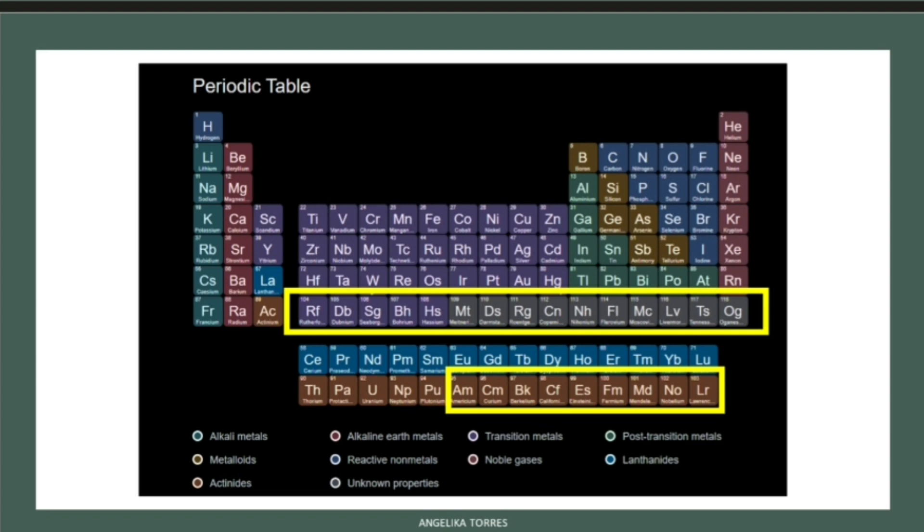24 of these elements are synthetic or man-made, meaning they are created by man in the laboratory. The synthetic elements are those with atomic numbers 95 to 118, as shown inside the yellow box.